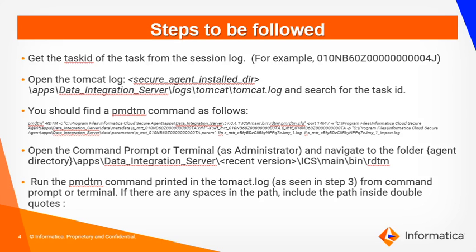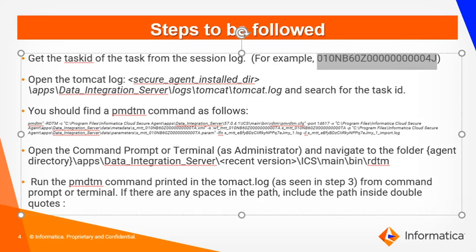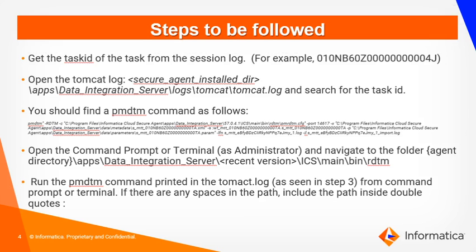How to run the IACS task from command prompt: first, you will need to fetch the task ID of the task from the session log — a sample task ID would look like this. Once you find the task ID, open the latest version of the Tomcat log, which would be in the path: secure agent installation directory, apps, data integration server, logs, tomcat, tomcat.log — and search for the task ID of the task you are intending to trigger from the command prompt.